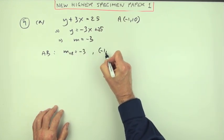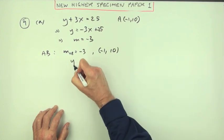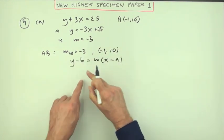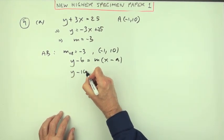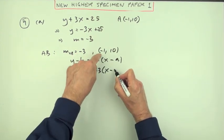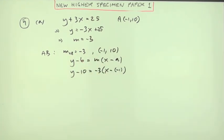And obviously it's going through the point (-1, 10), so you can put it into the equation y minus b equals m(x minus a). You've got y minus 10 is negative 3 times x minus the negative 1.